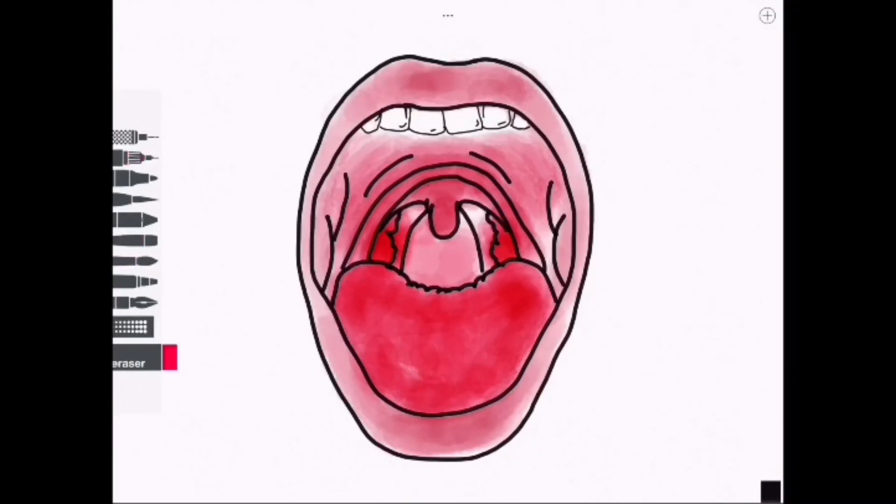We're going to kick things off by reviewing some of the basic anatomy of the region starting with the uvula. This is a structure that hangs down in the midline and supports and thickens the soft palate.